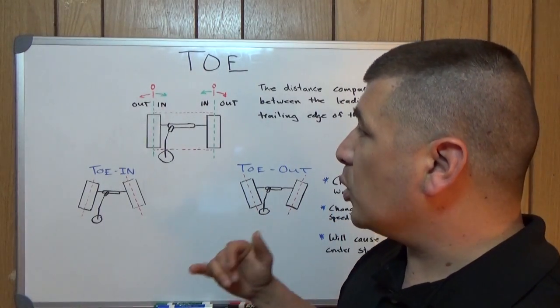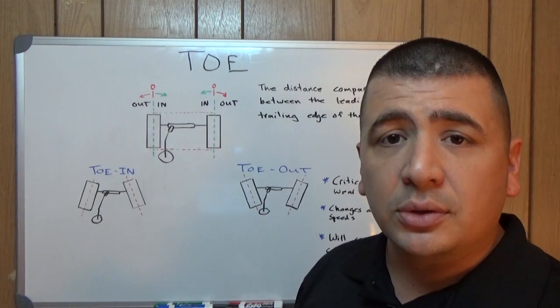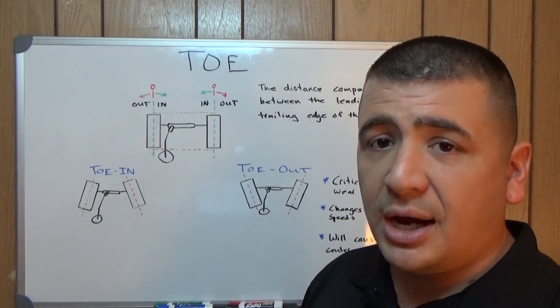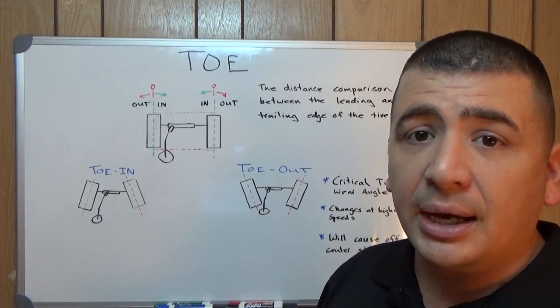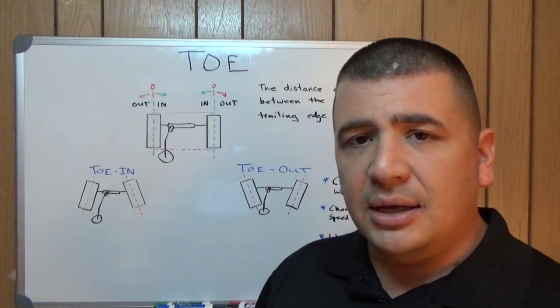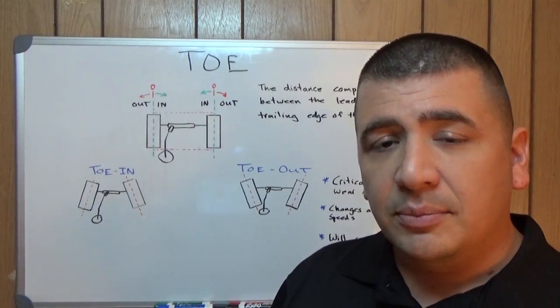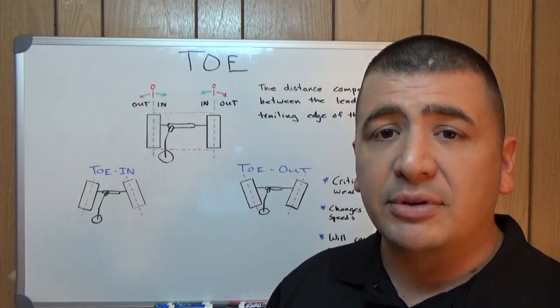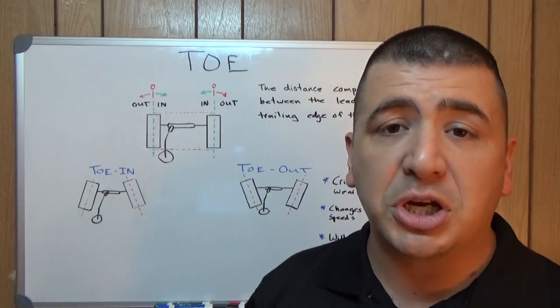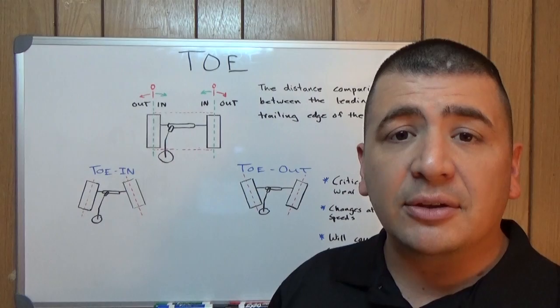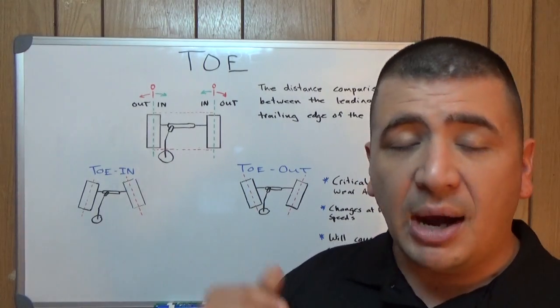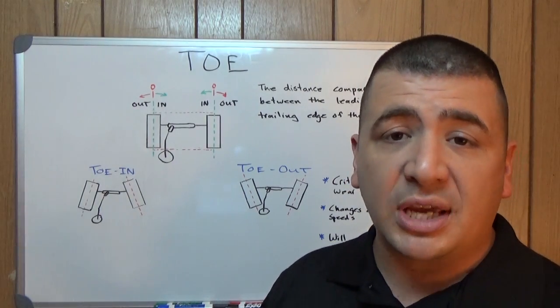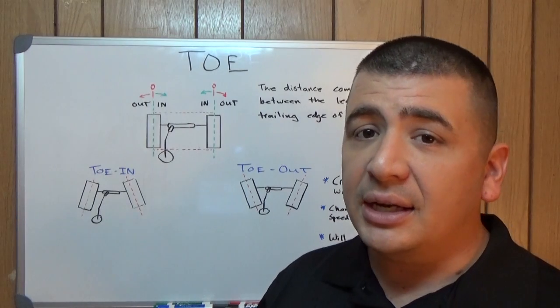Now toe, more so than any other alignment angle, is a critical tire wear angle and it can just destroy your tires very quickly if it's out by a whole lot. In fact, I have seen people who've replaced their own suspension components, tie rod ends, or even ball joints, and they don't get everything back together just right, or there's enough of a change to toe when they put it all back together that driving 20 miles to get to an alignment shop has just ruined their tires.